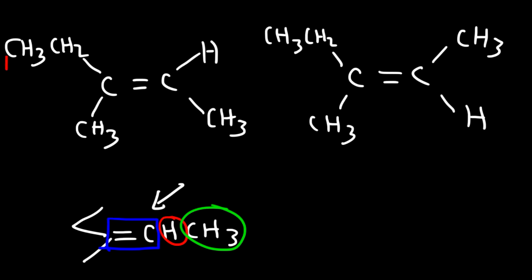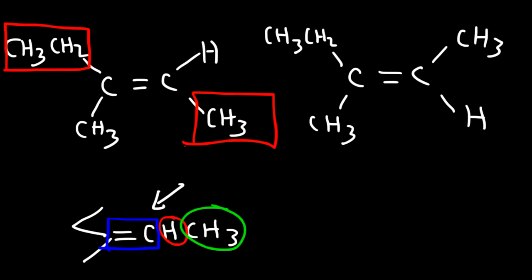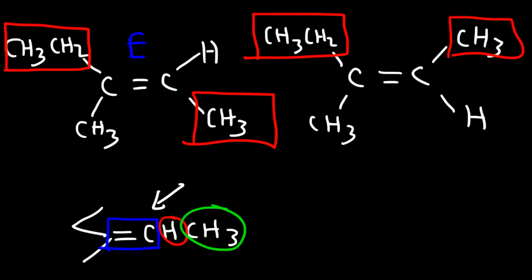On the left side, this is the highest-priority group, and on the right side the methyl group has more priority than the hydrogen. So this is the E isomer, and here we have the Z isomer. Now let's look at another example.